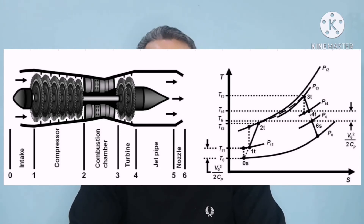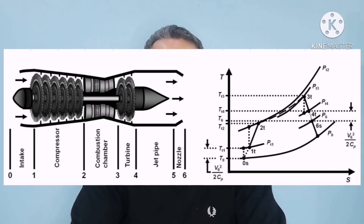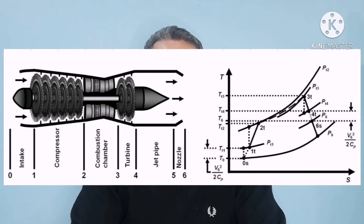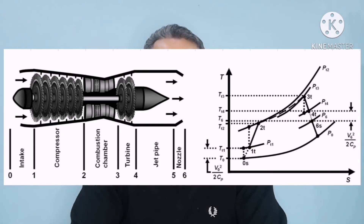On the TS diagram, stations 0s and 6s represent the static condition. All other stations, including stations 1t through 4t, represent the total condition. Process lines joining unlike conditions — static to total stations — are drawn as small dotted lines.